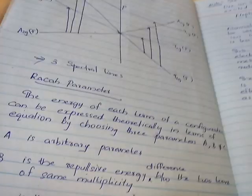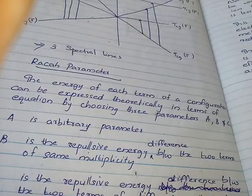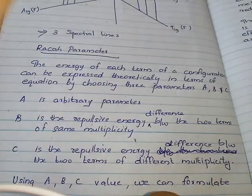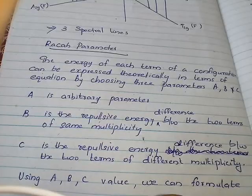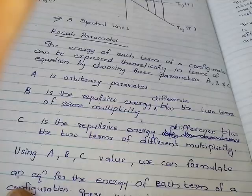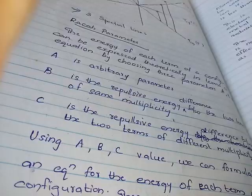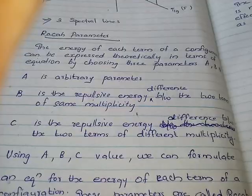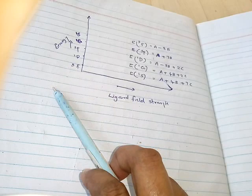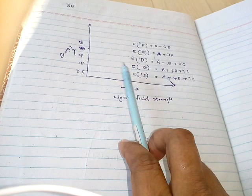The next topic is Racah parameters. The energy of each term of a configuration can be expressed theoretically in terms of an equation by choosing three parameters A, B, and C. A is an arbitrary parameter. B is the repulsive energy difference between two terms of the same multiplicity. C is the repulsive energy difference between two terms of different multiplicity. Using A, B, C values we can formulate an equation for the energy of each term of a configuration. These parameters are called Racah parameters.